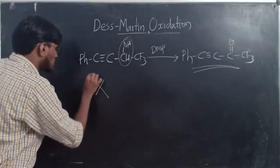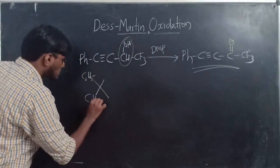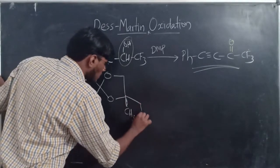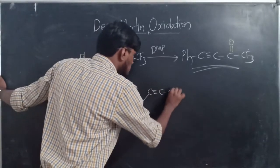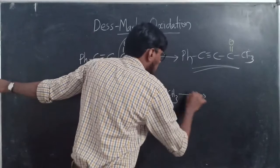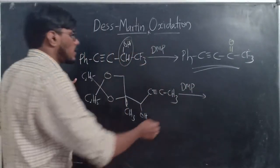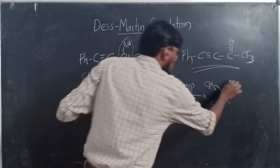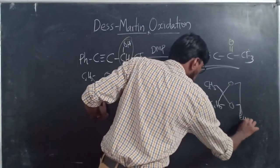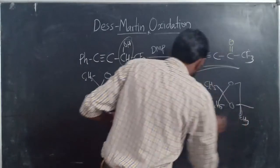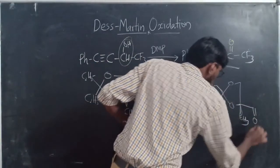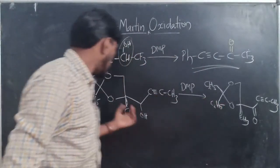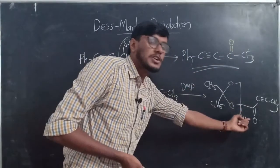Another example: a compound with three C₂H₅ groups, three OH groups, and a –C≡C–CH₃ group reacted with DMP. The product has the three C₂H₅ and OH groups retained, but the secondary alcoholic group –CHOH– is converted to a ketonic group C=O, giving –C(=O)–C≡C–CH₃.